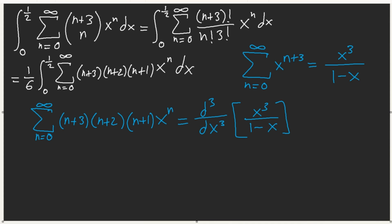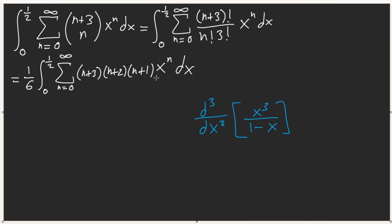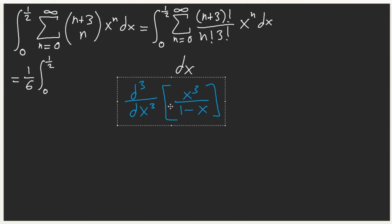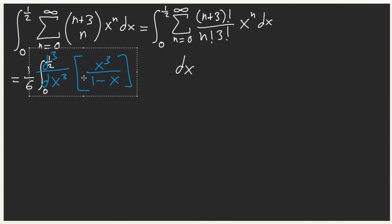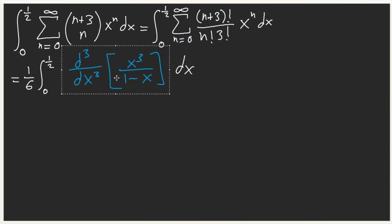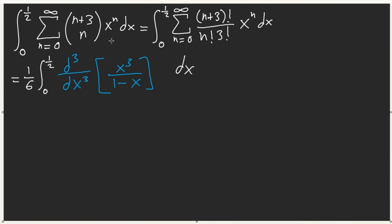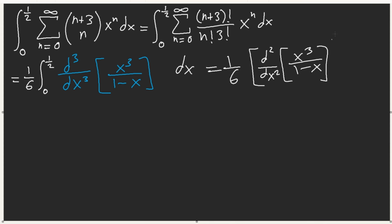So now we're going to substitute that in. Our sum is the third derivative of x³/(1-x). So we can easily solve this — this is technically (1/6) times the second derivative of x³/(1-x), from 0 to 1/2.